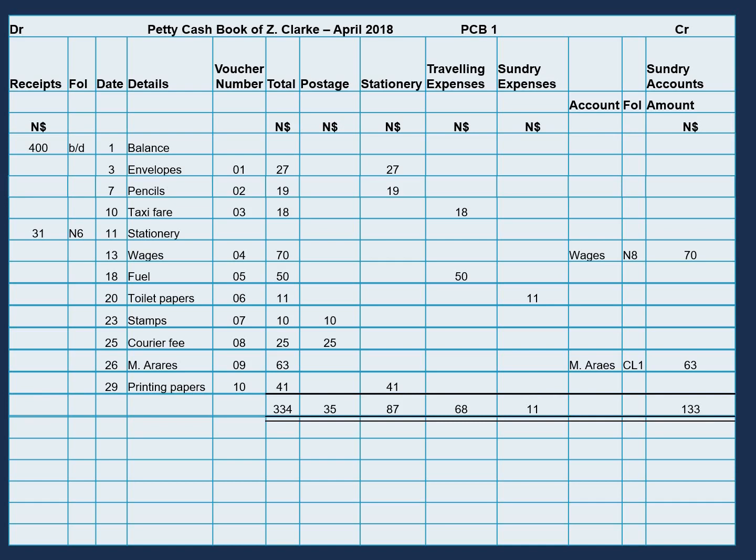There we go. Then we need to number our expenses, which we will enter in our general ledger. So postage will be N5, stationary will be N6, travel expenses will be N7, and sundry expenses will be N8.